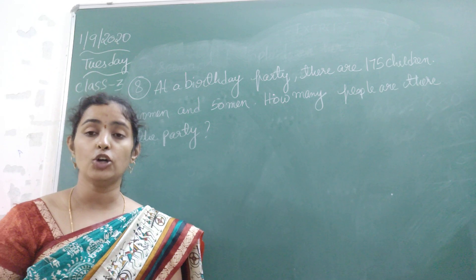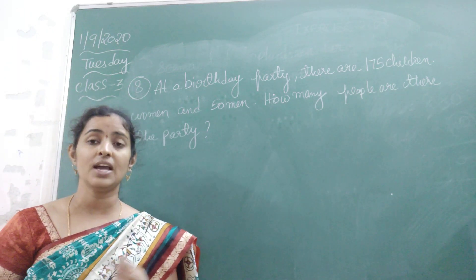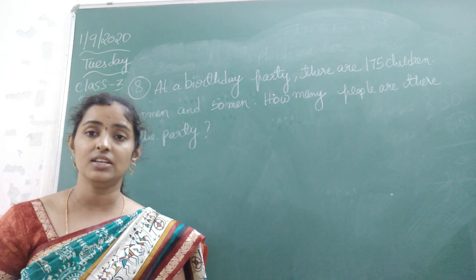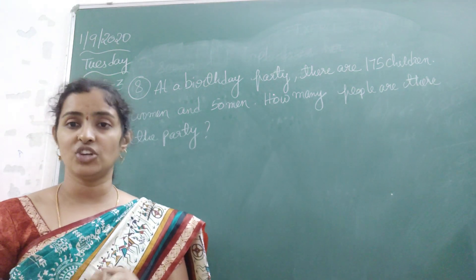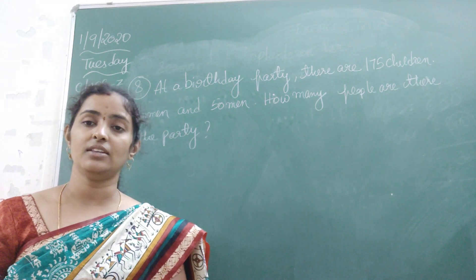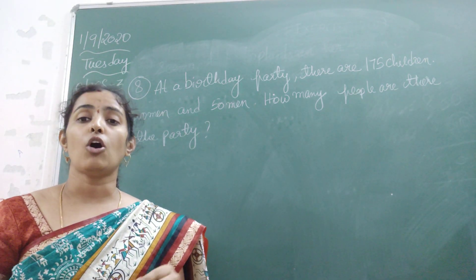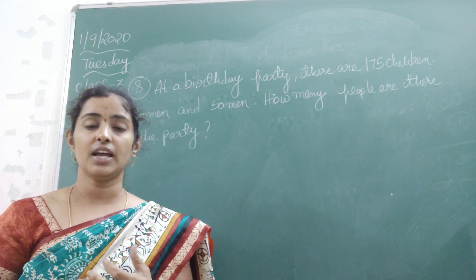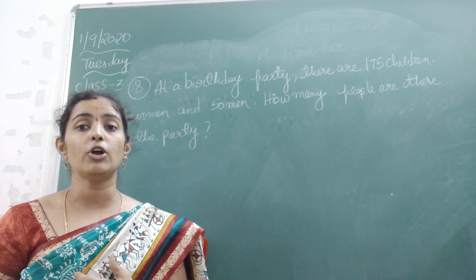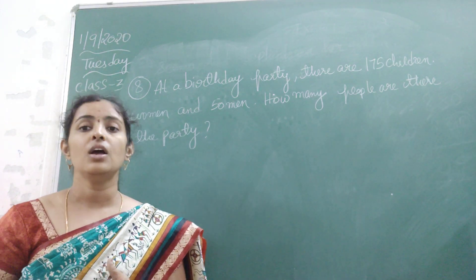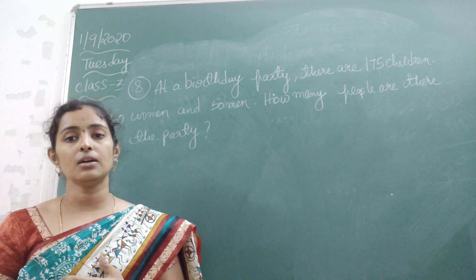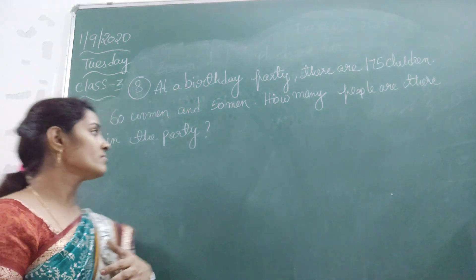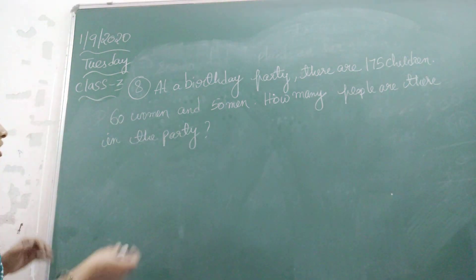To find out, we need to add men — how many are there — women how many are there, and children how many are there. All together we need to add. Then we will get the total number of people at the party.